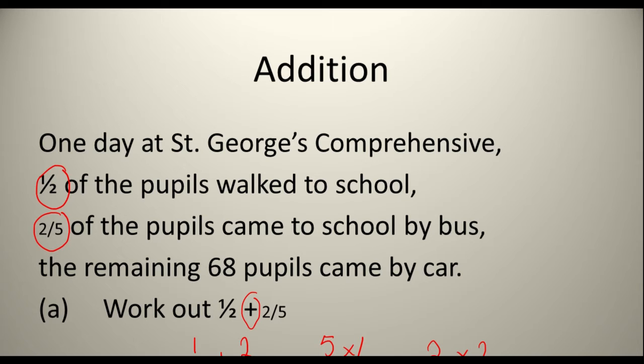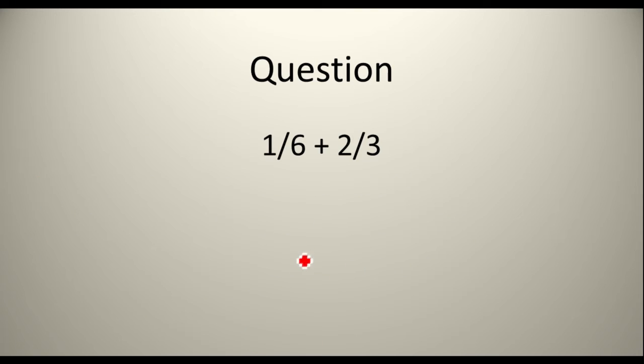And you keep the denominators the same. Therefore a half plus two fifths equals nine tenths. Make sure that if your fraction could be simplified further, make sure that you do that. But in this case you don't need to simplify further. Here's a question. Now hit pause and do this question.